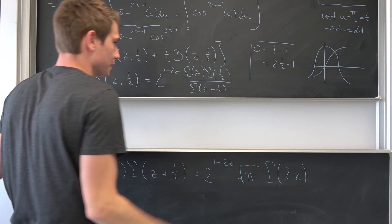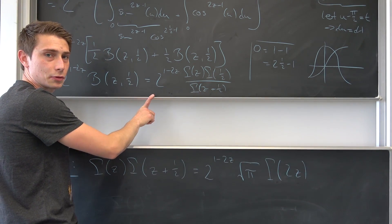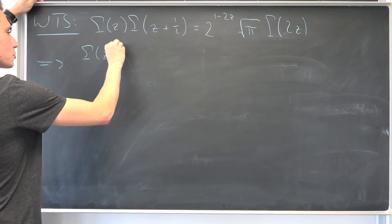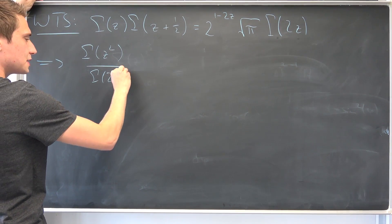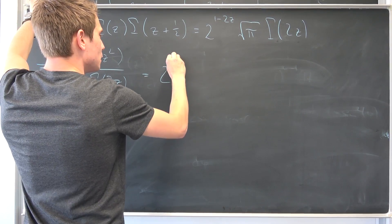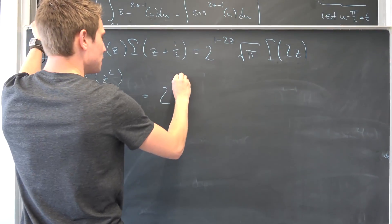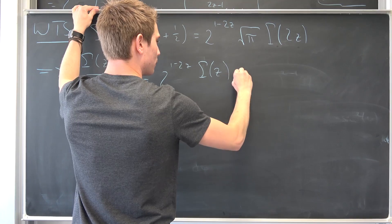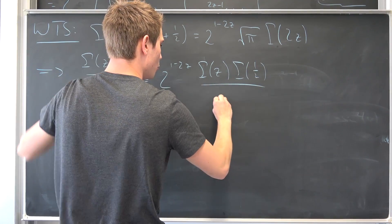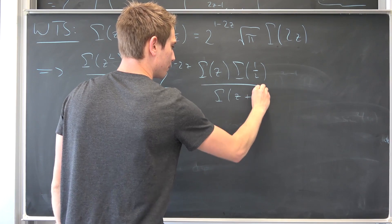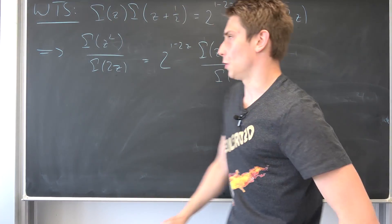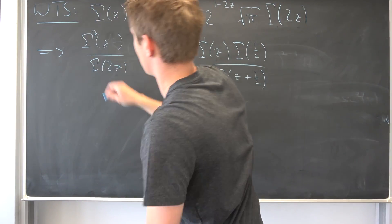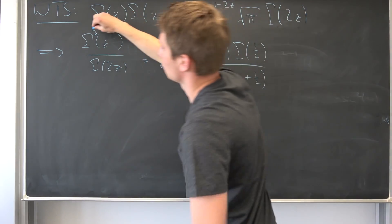Now we don't want to forget what this was equal to: Beta of z comma z, meaning Gamma of z squared over Gamma of 2z. This equals 2 to the 1 minus 2z power times Gamma of z times Gamma of one-half over Gamma of z plus one-half. Since the Gamma function is never zero, and we had Gamma of z squared — not Gamma of z squared — we can get rid of one of those Gamma of z factors.